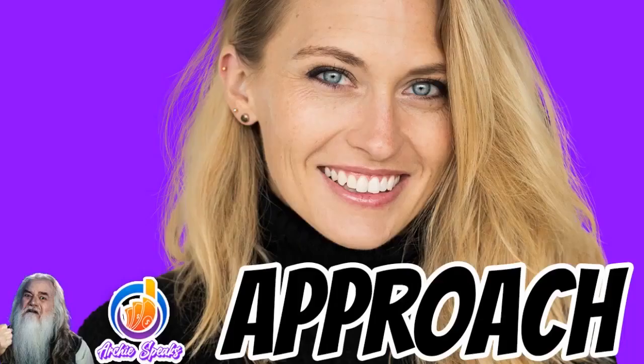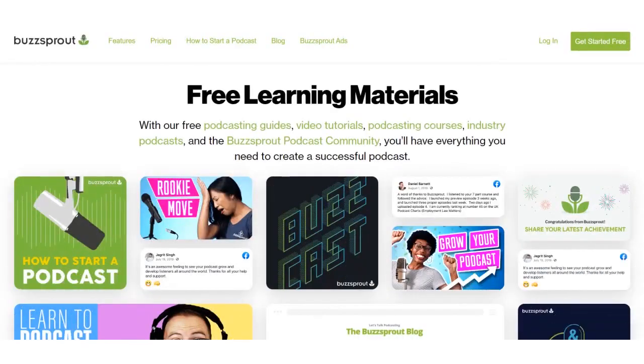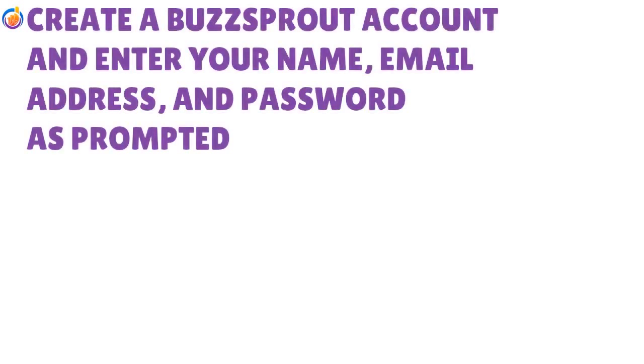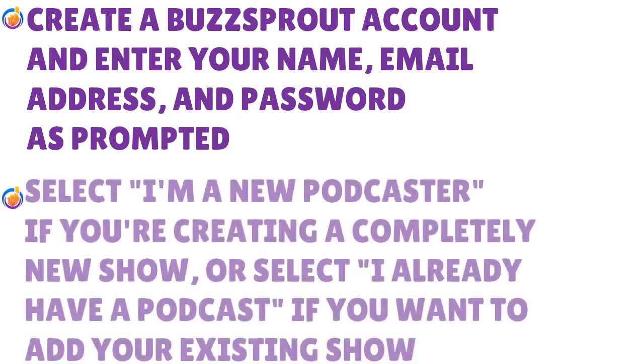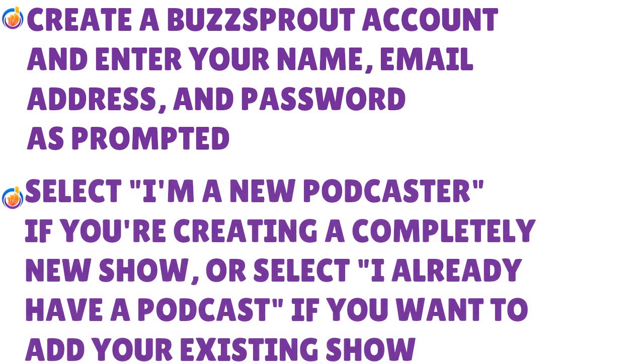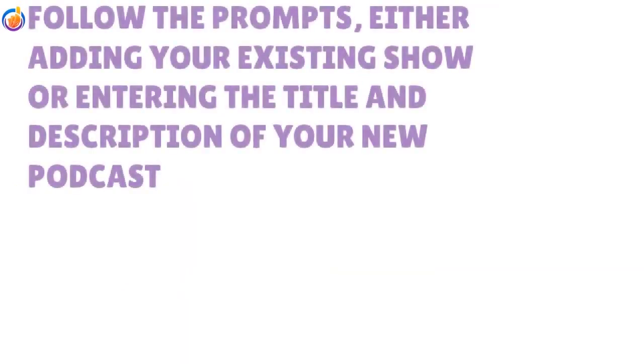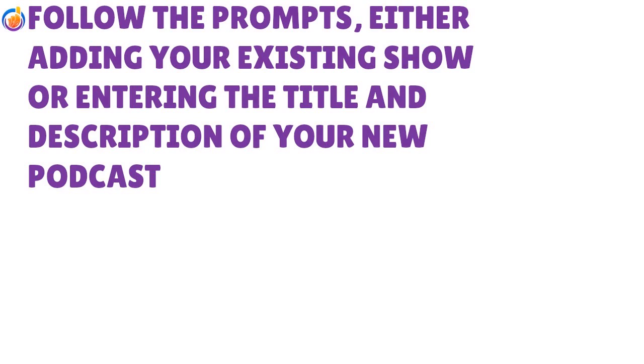Here's how to get started with Buzzsprout. After taking the initial steps to start a podcast, you need to get your content online so your audience can find it. You can set up a new podcast in Buzzsprout in just a couple of minutes. Step one: create a Buzzsprout account and enter your name, email address, and password. Step two: select 'I'm a new podcaster' if creating a new show, or 'I already have a podcast' if adding an existing show. Step three: follow the prompts to add your existing show or enter the title and description of your new podcast.